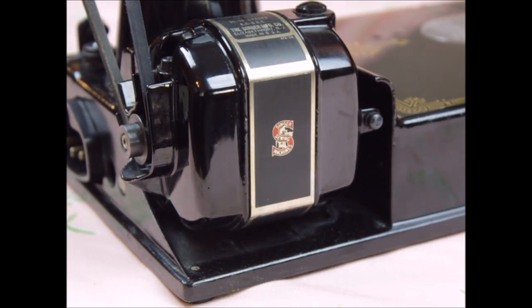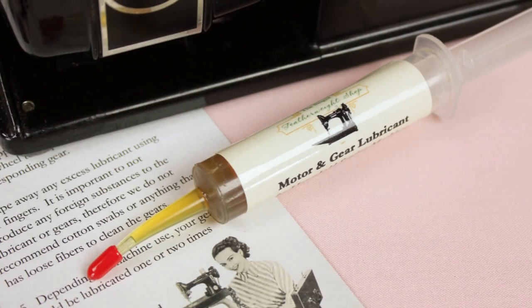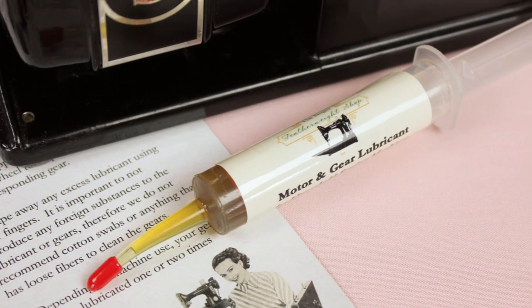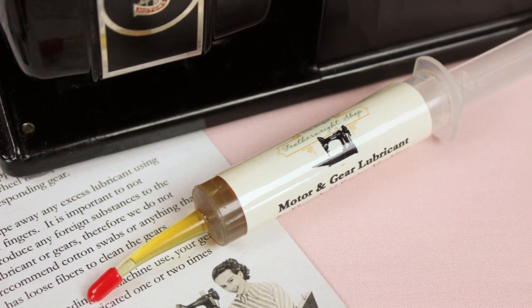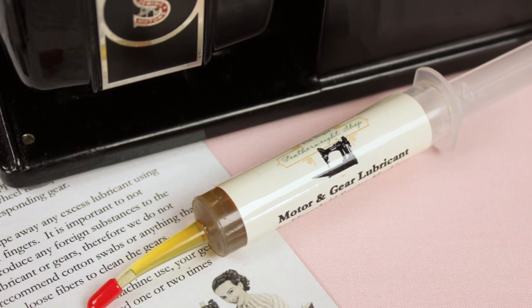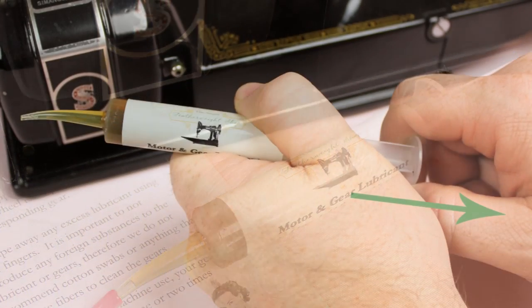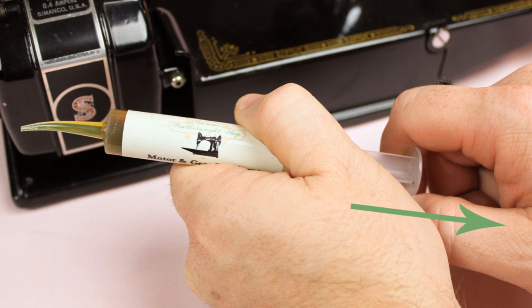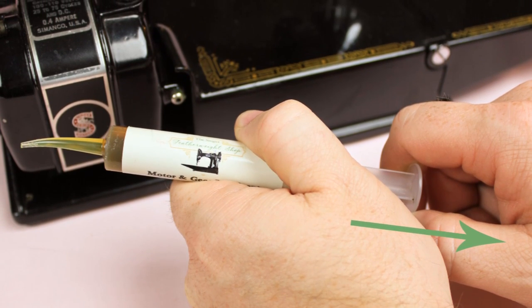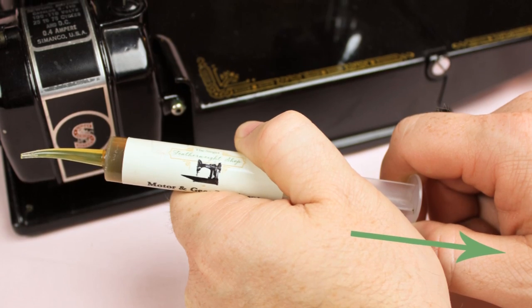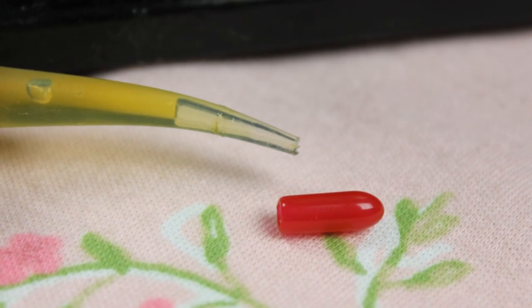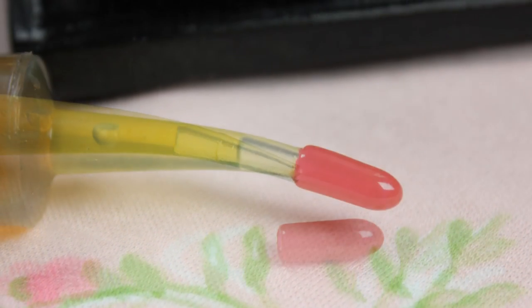Singer originally recommended lubricating the motor about every six months, and the gears occasionally as needed. This is the Singer Featherweight shop's recommendation as well. When you are finished lubricating the gears and or motor, it may be necessary to pull slightly back on the plunger so that the lubricant is no longer under pressure. Then you can replace the cap to the tip and store it without leaking.